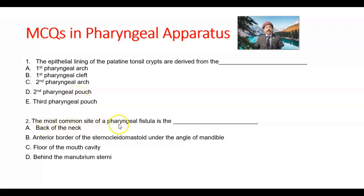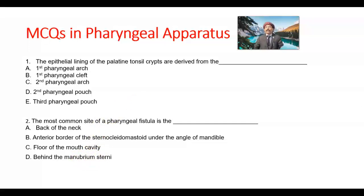Question number 2. The most common site of a pharyngeal fistula, also called branchial fistula, is: back of the neck, anterior border of the sternocleidomastoid muscle under the angle of the mandible, floor of the mouth cavity, or behind the manubrium sternum. One part is inside the pharynx, and the other opening is at the anterior border of the sternocleidomastoid under the angle of the mandible. The answer is B.